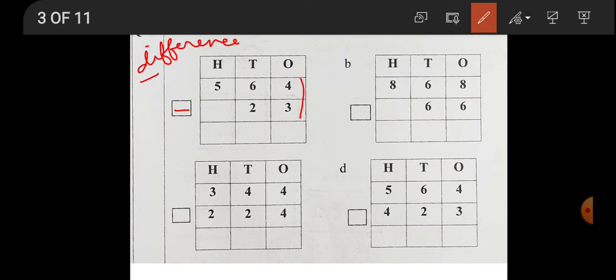Here it is 4 minus 3. Everybody put 4 fingers up. Very good. Put 3 fingers down. How many left? 1. So please write 1. Next is 6 minus 2. Put 6 fingers up. Put 2 fingers down. How many left? Count 1, 2, 3, 4. So 4. And here there is nothing, so 5 as it is.